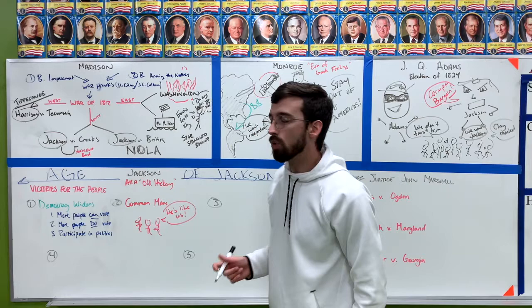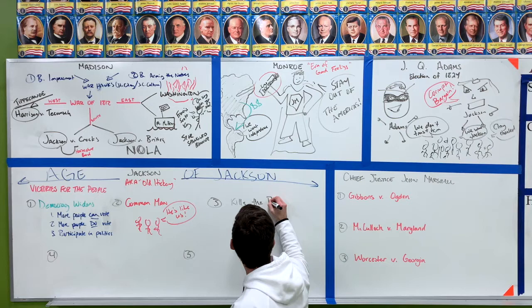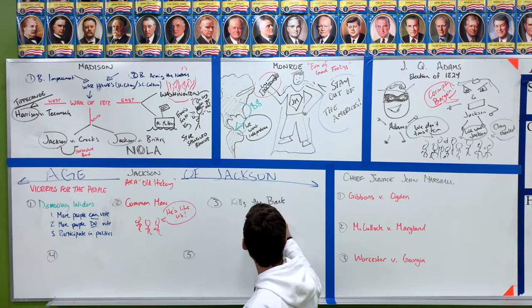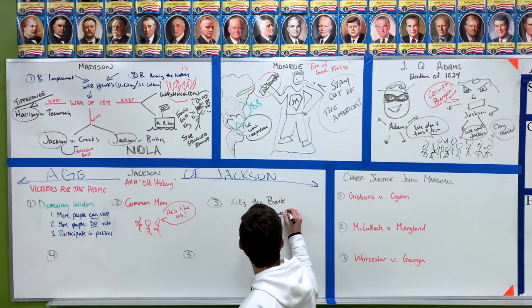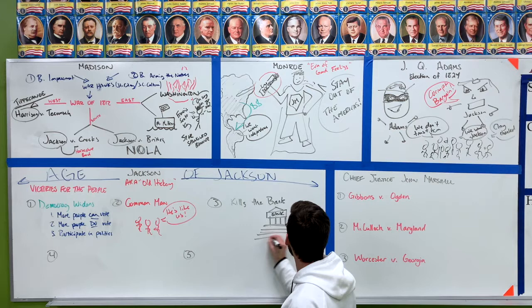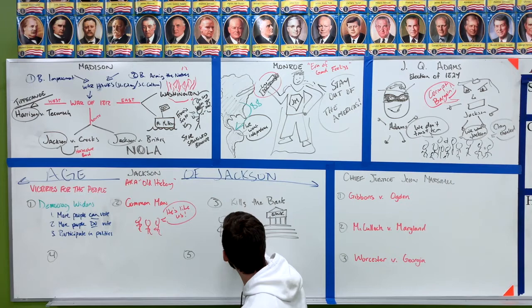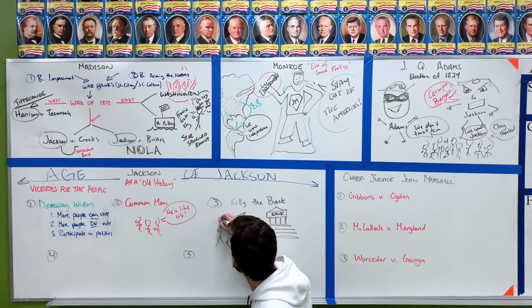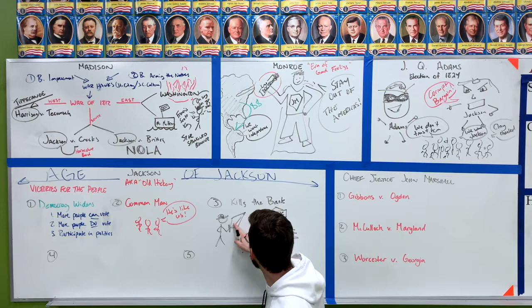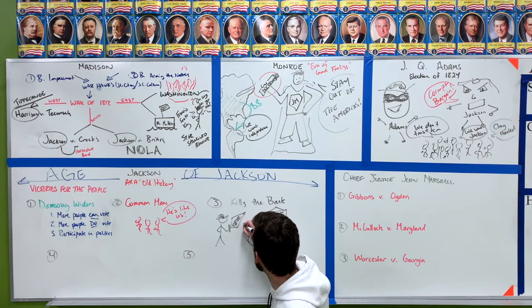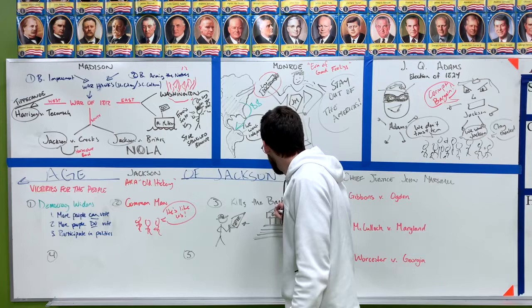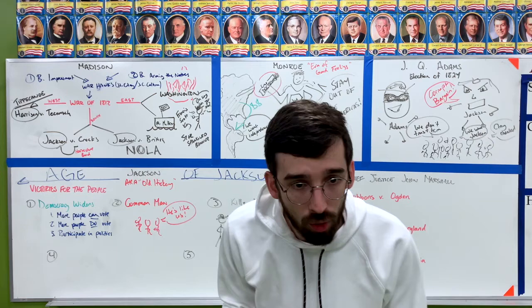Victory number three is that Andrew Jackson kills the bank. The bank was good for the rich but it wasn't good for the average people — it didn't benefit them. Andrew Jackson comes after the bank with his weapon, which is the veto. That is how he kills it: the U.S. Bank killed by Andrew Jackson with the veto.